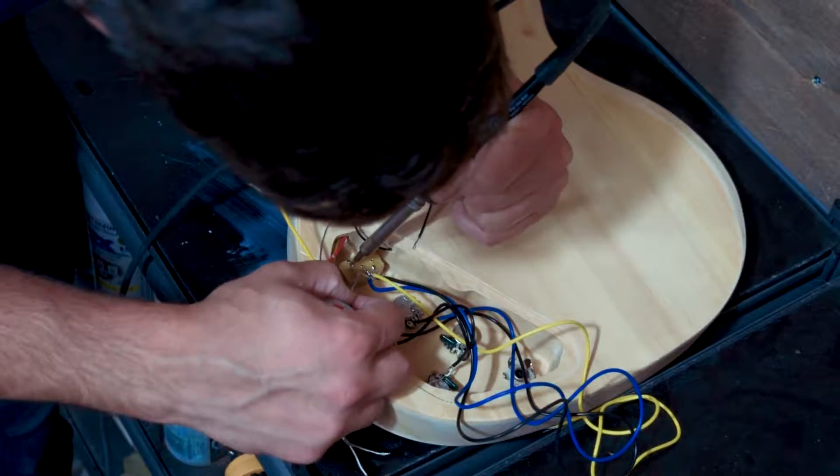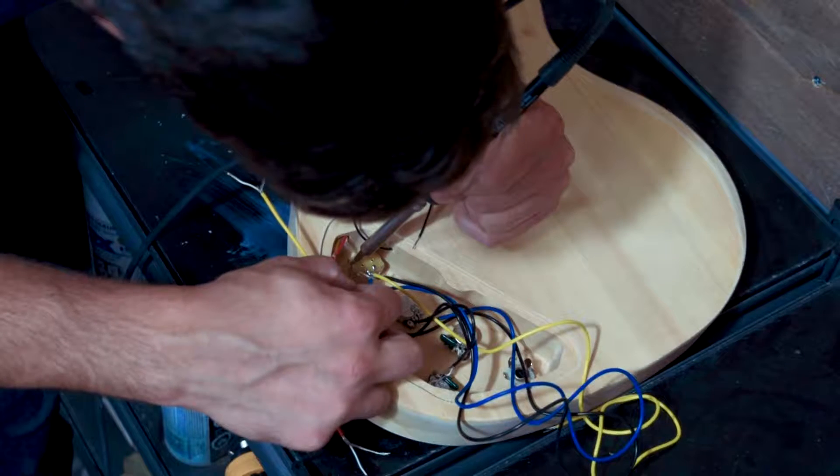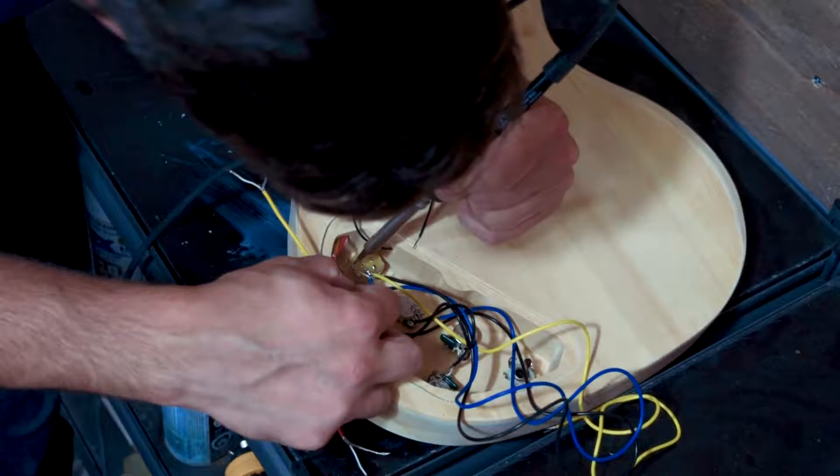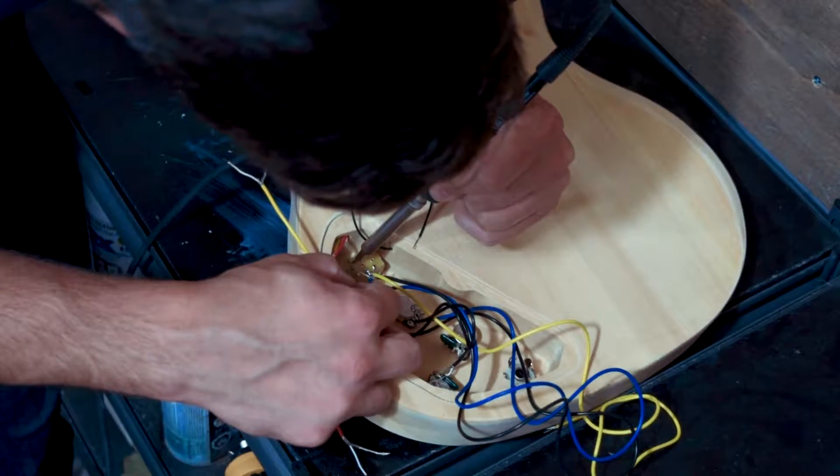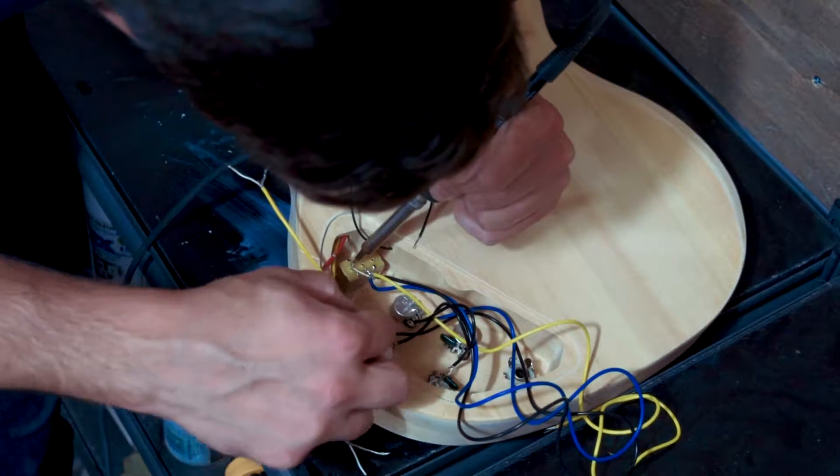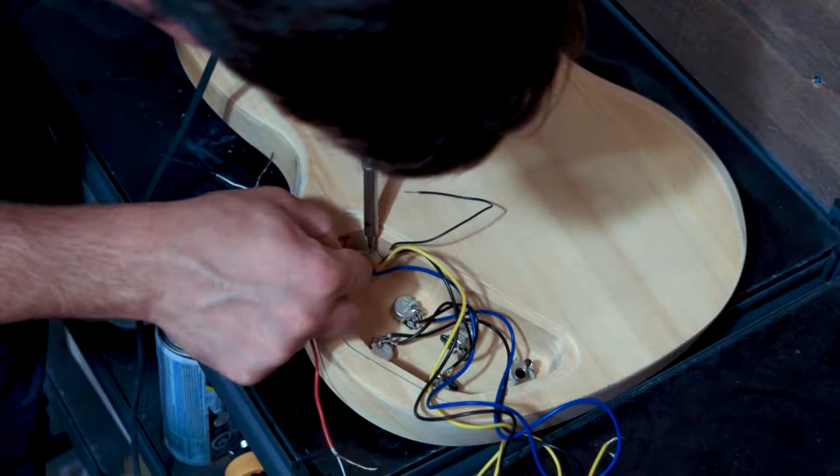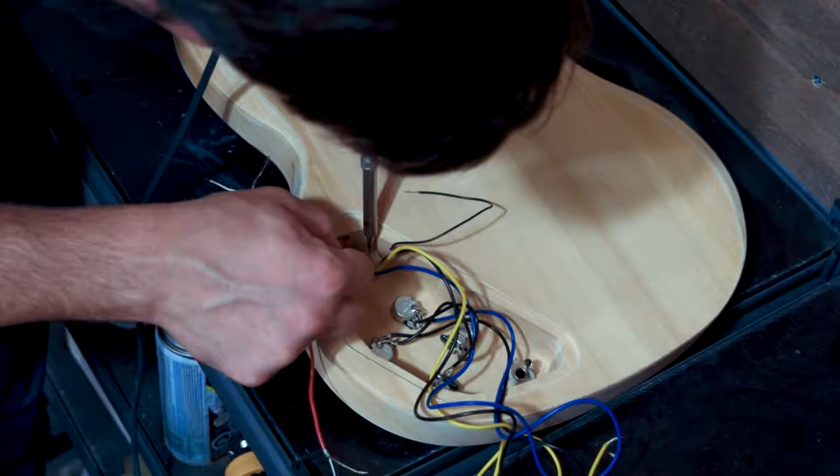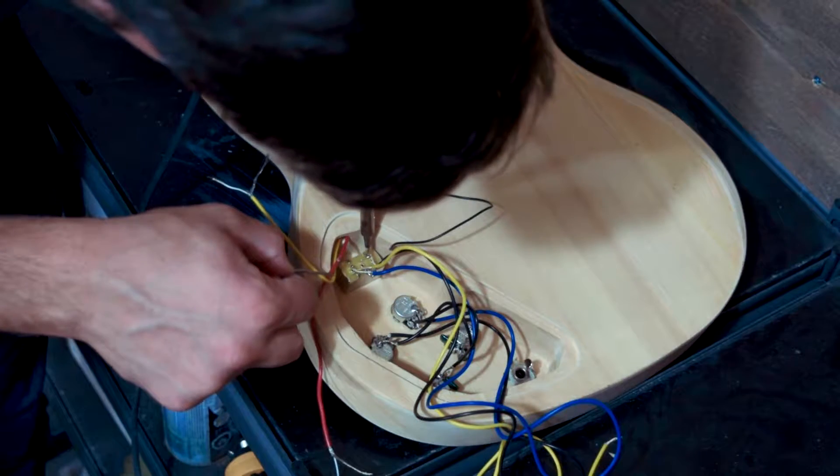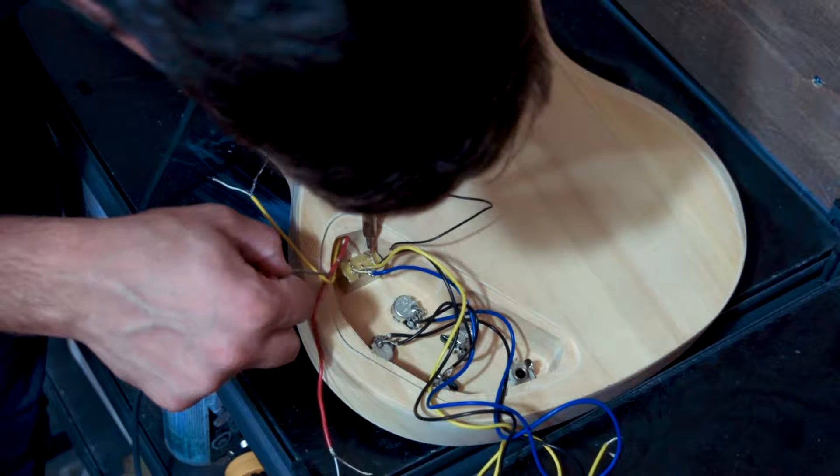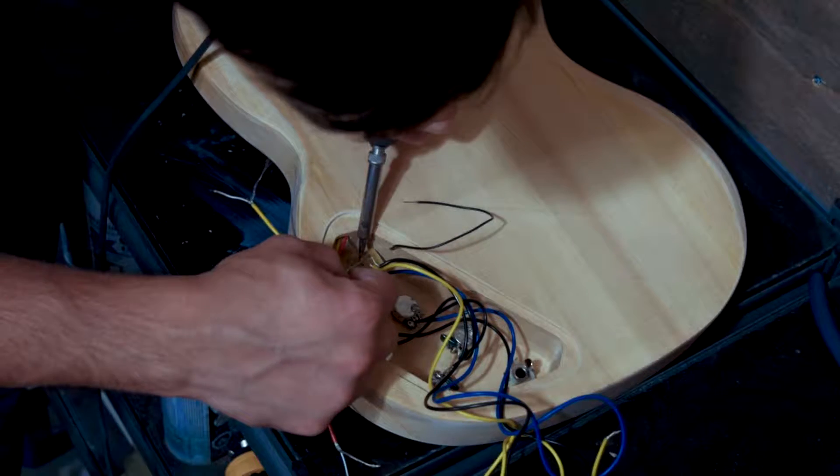Then you've got your three others. So in this case, the switch activates the lug that is opposite from the direction that it's flipped in. So you'll want to do your neck pickup at the bottom here and your bridge pickup at the top so that when your switch is in the up position, you're activating the neck pickup. And when you throw it down, you activate the bridge pickup. That's generally how they're wired.